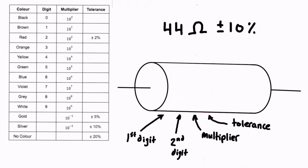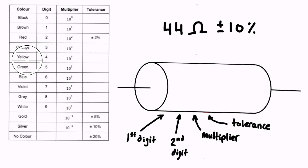Let's do another example with 44 ohms plus or minus 10%. Our first digit and second digit are both 4s. Looking in the table for where 4 is — that's going to be yellow. So we draw on our first band as yellow and our second band as yellow as well.